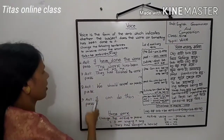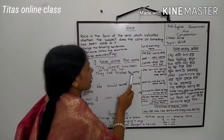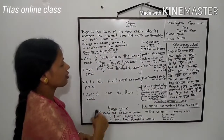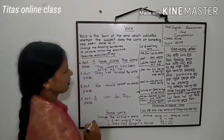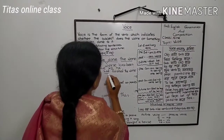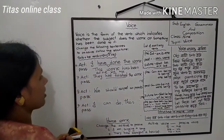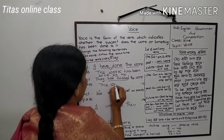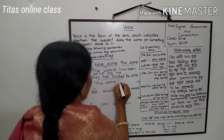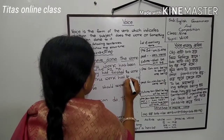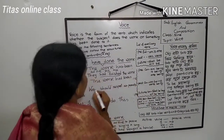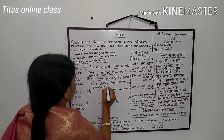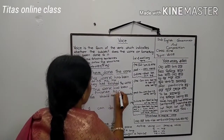Another one: 'They had finished the work.' 'Had' plus verb in past participle form is used in the past perfect tense. So we must use the auxiliary verb 'had been' in the passive voice: 'The work had been finished by them.' Note: 'they' is the subjective form and 'them' is the objective form.